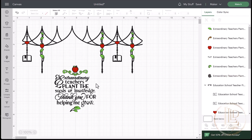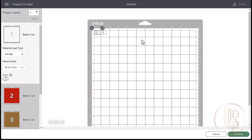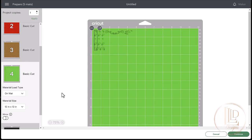Next, I will select make it and the designs will automatically be sorted onto their cutting mats by color. I preview each mat by clicking on it and if I see vinyl will be wasted, reposition the items on the mat and can then send the mats to the cutting machine.